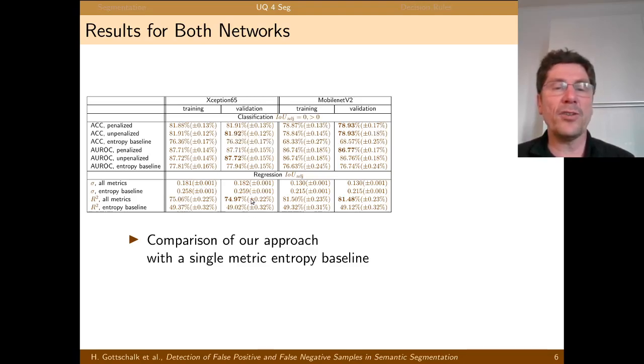And what you see here is a binary regression task of predicting the jacquard index or the IOU, which we adjusted a little bit for that. Please refer to our paper. And then you see that you get an R-square of up to 81% for the mobile net.